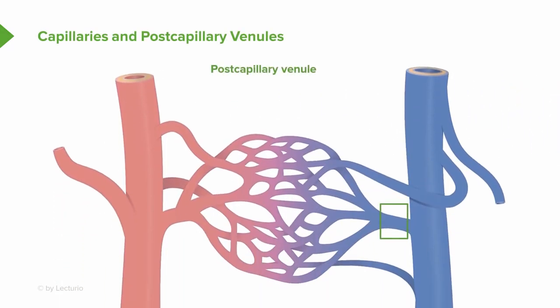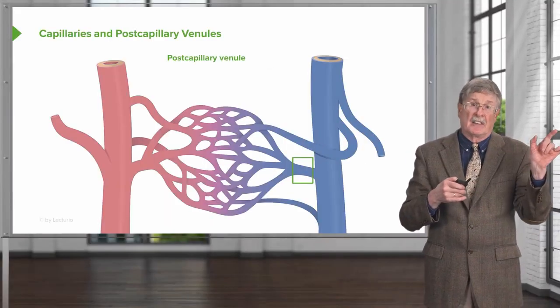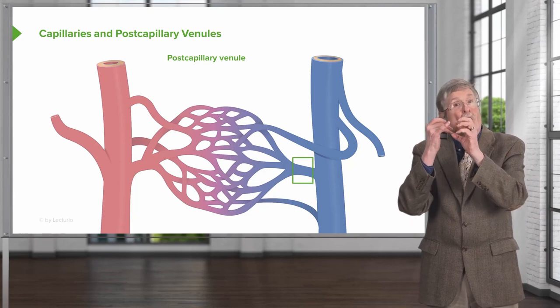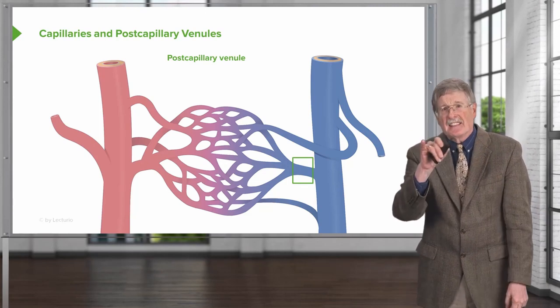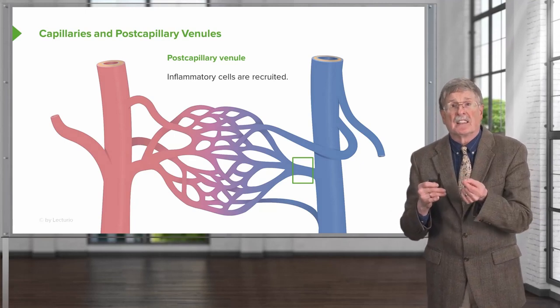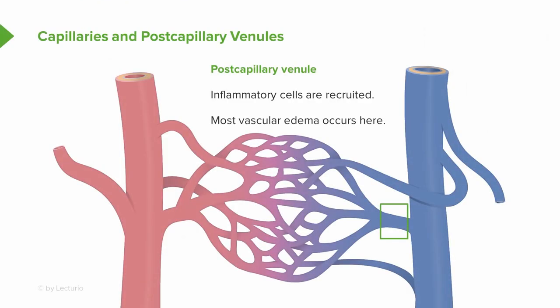Coming out of the capillaries into the post-capillary venule, we've gone from an artery to an arteriole to a capillary bed where all that exchange occurred, and that coalesces back to a post-capillary venule. This is actually the site of all the action with regard to inflammation — where inflammatory cells are recruited at sites of infection or injury. It's also where most vascular edema occurs: when we have increased vascular pressure or increased vessel permeability, fluid is generally leaking out of the post-capillary venules.